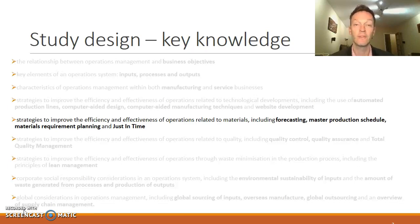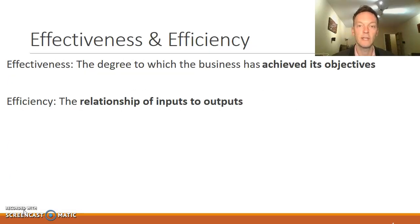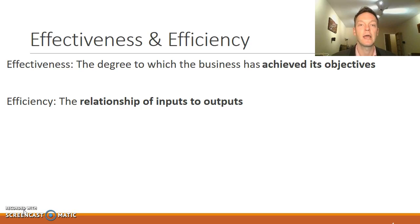If you want a little bit more information on what efficiency and effectiveness of operations is, feel free to check out that as a separate video already uploaded to YouTube. As a quick recap: effectiveness is the degree to which the business has achieved its objectives — its core business objectives like sales, market share, and profit — whereas efficiency is how well the business manages its relationship of inputs to outputs.